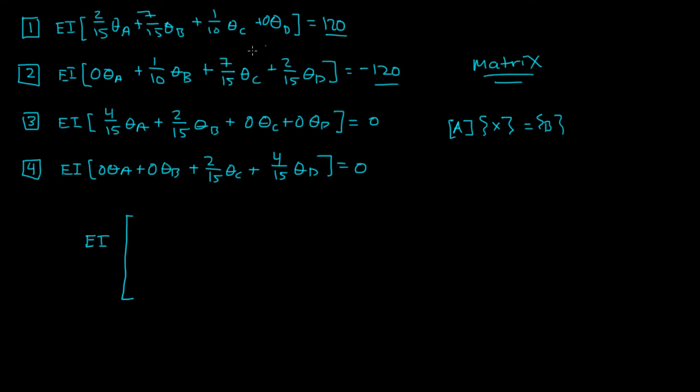So it would be 2/15, you have 7/15, then you have 1/10, and then you have 0. Second row, you have 0, 1/10, 7/15, and then you have 2/15. And then the third row, you have 4/15, 2/15, 0 and 0. And then you have 0, 0, then you have 2/15, and then you have 4/15, right?